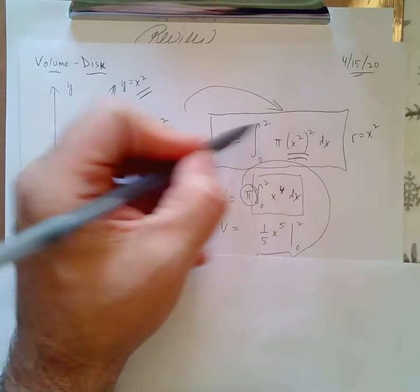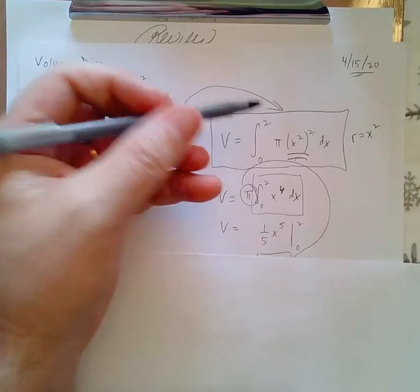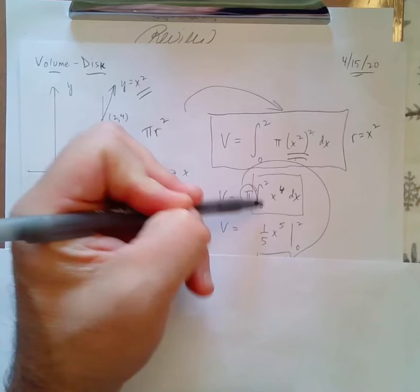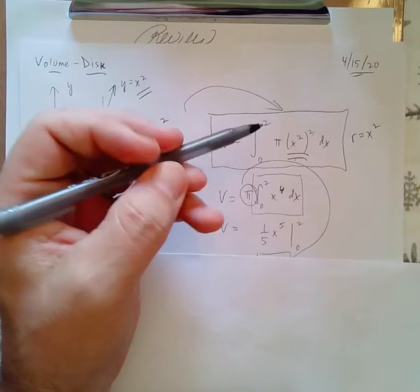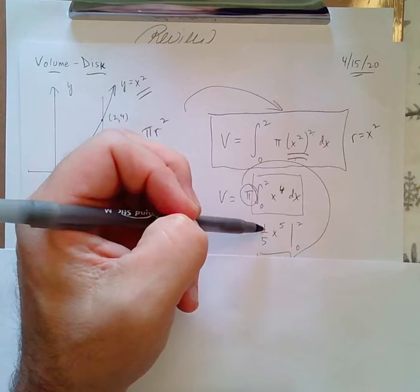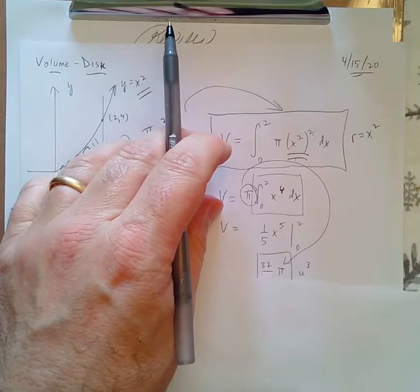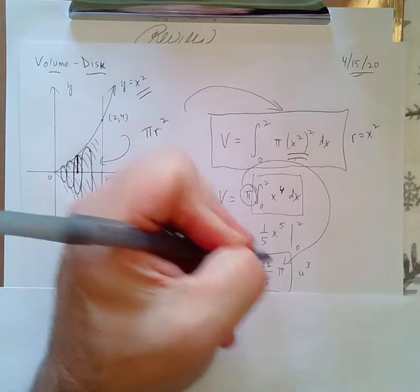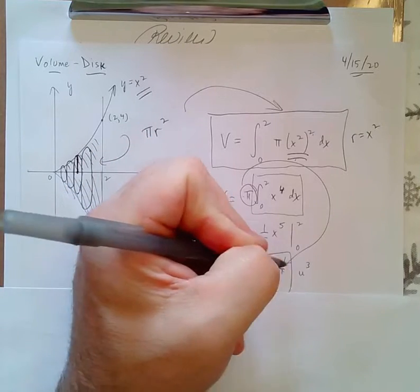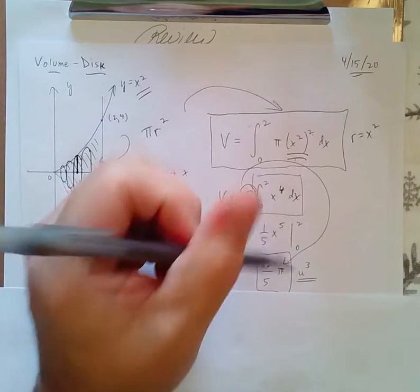Pull the pi out, because it's a constant, and I'm essentially integrating the integral from zero to two of x to the fourth power dx, which I could do on my own. And then when I get the answer, don't forget to put the pi back in. So that might be good practice. And with volume, it's cubic units.